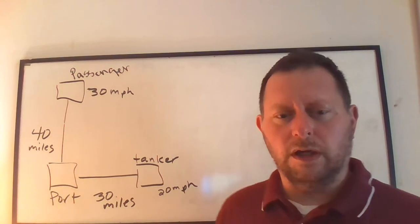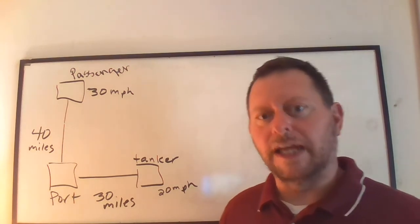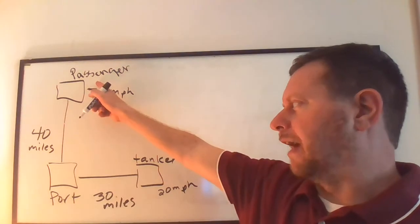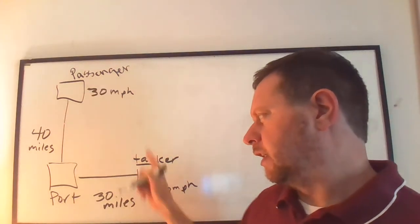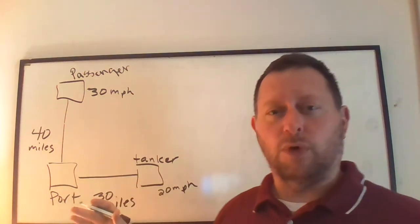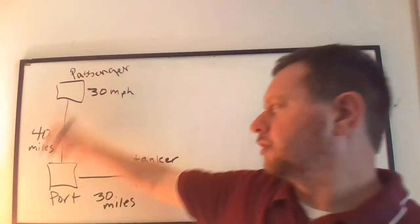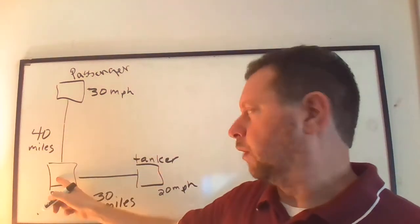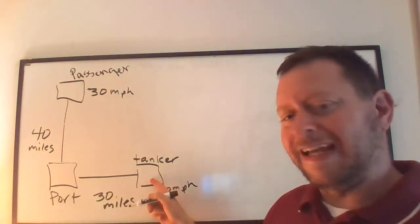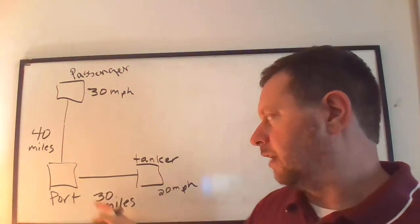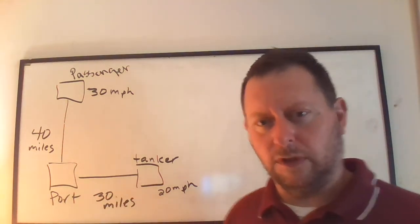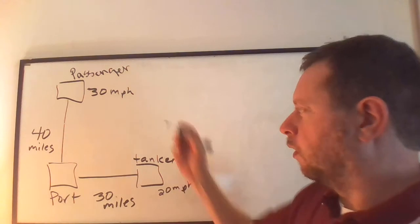We are doing a related rate problem. We have two ships, a passenger ship and a tanker ship. They both left the port sometime this morning. It's now 12 o'clock. The passenger ship is 40 miles away from the port, traveling at a speed of 30 miles per hour. We have a tanker that is 30 miles away from the port and it's traveling 20 miles per hour.